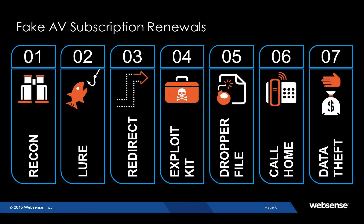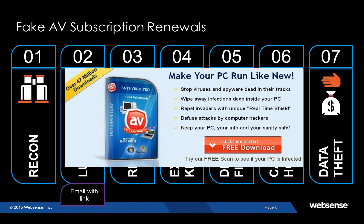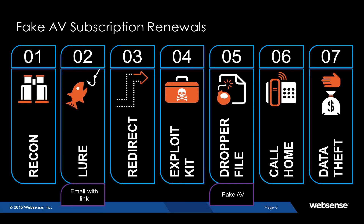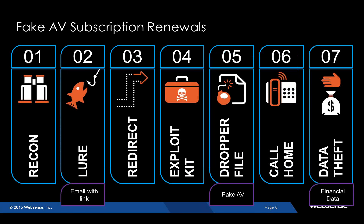Starting with a really basic example of how these things operate — fake AV. Friends and family have been targeted and become victims. It starts with a lure stage: somebody receives an email with a link, they click on it, and all of a sudden they get a pop-up saying congratulations, offering some anti-virus pro technology — try now, buy later. They unfortunately click that link and a piece of malware downloads. These groups have great marketing — 'Keep your PC, your info, and your sanity safe.' The malware comes down as a dropper file, typically installed through email or a web-driven payload. While it may appear to offer some type of security, the underlying code is really there to steal financial data.